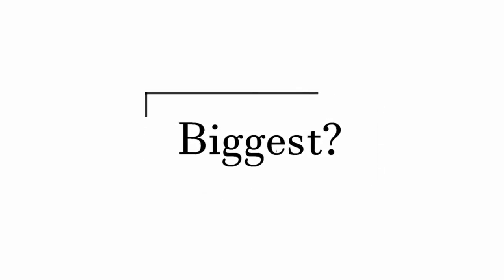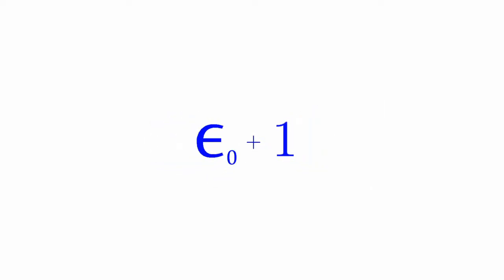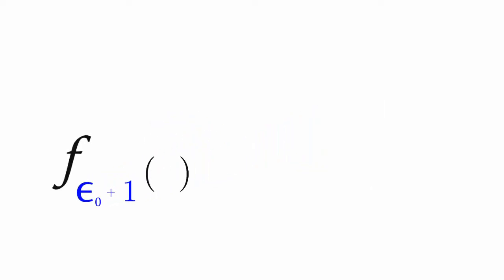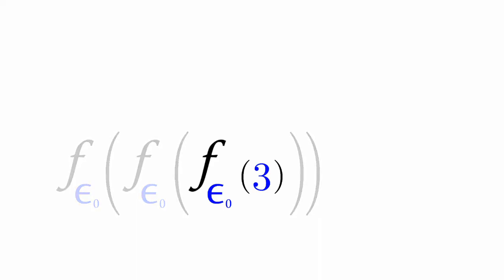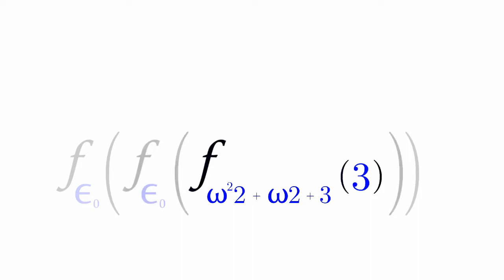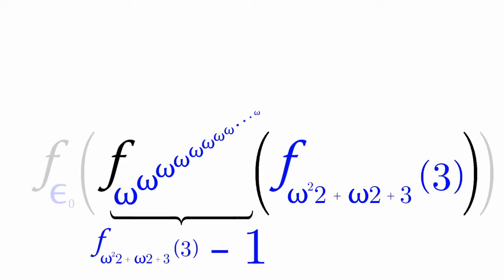So, is epsilon_naught our biggest number? Can we not go bigger? Actually we can. We can do epsilon_naught plus 1. Let's have f_epsilon_naught_plus_1 of 3. This breaks down into 3 copies of the f_epsilon_naught function. f_epsilon_naught of 3, as we've known, is f_omega_cubed of 3. Now, f_epsilon_naught of f_omega_cubed of 3 is f of omega to the omega to the omega — f_omega_cubed of 3 minus 1 times. And then finally, we do f_epsilon_naught of this whole thing.